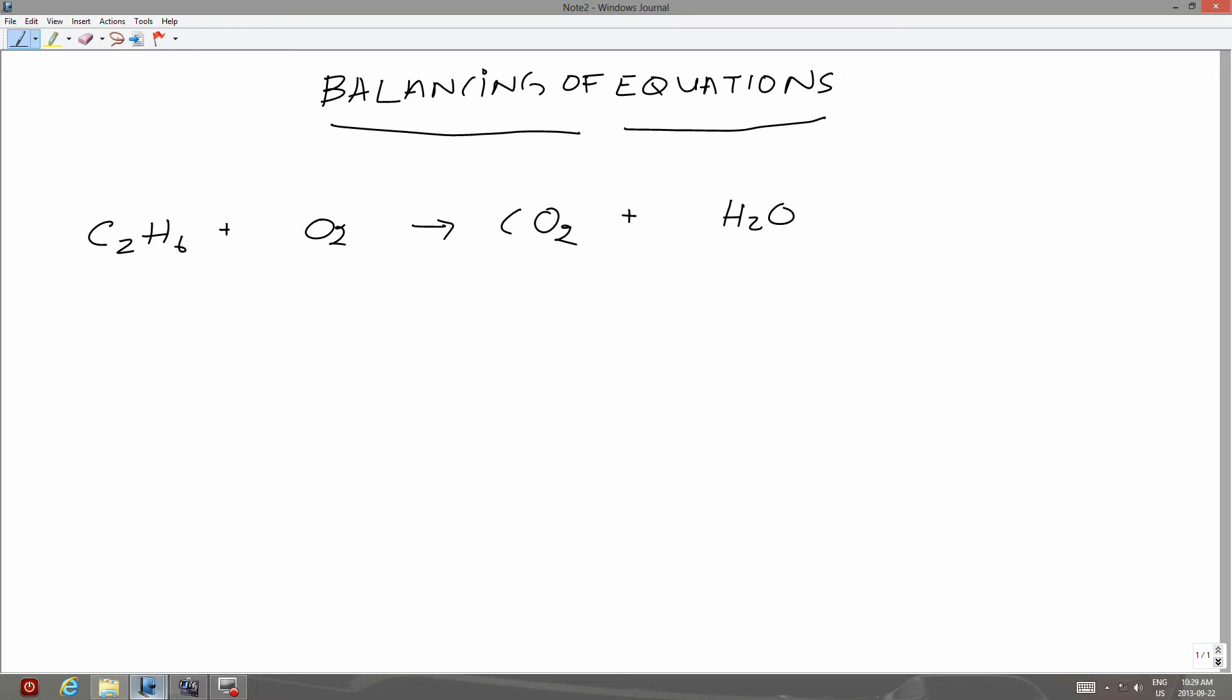So if you pick carbon, it forms a single compound on the product side. And if you pick hydrogen, it forms a single compound on the right side, which is water. Whereas oxygen, on the other hand, forms two compounds. The first one is carbon dioxide, which contains oxygen. And the second one is water, again, which contains oxygen.